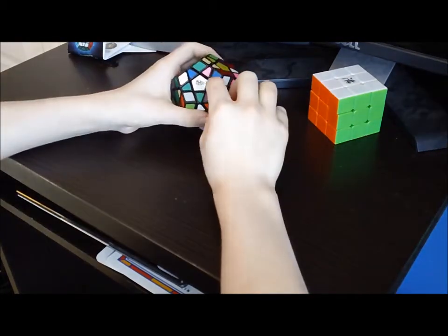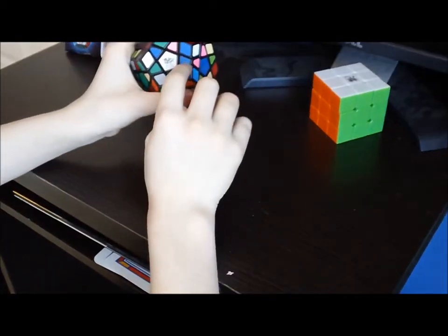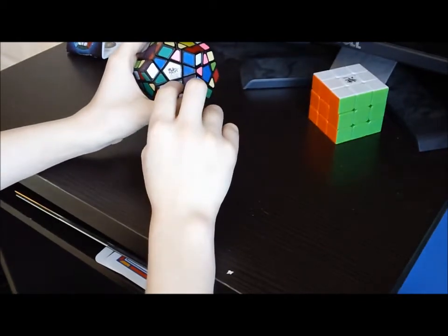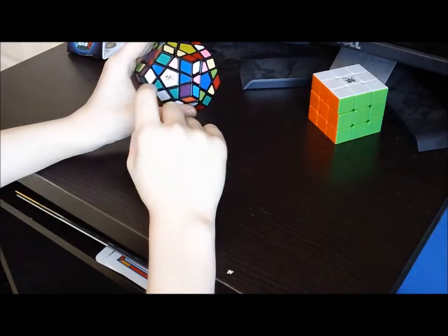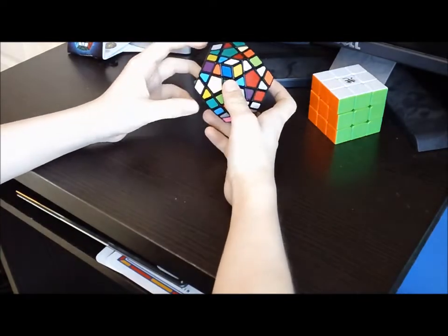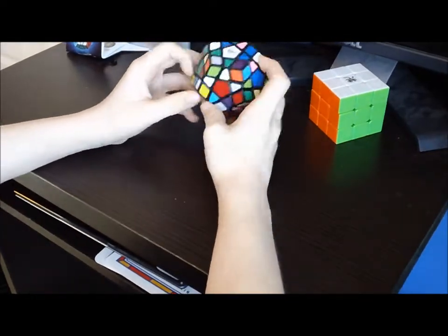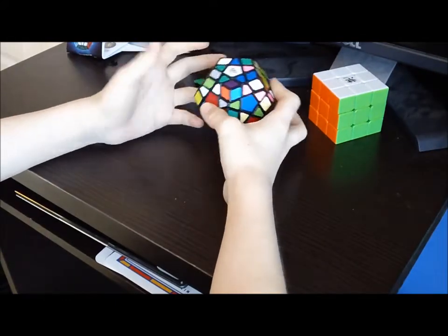The edges are these little triangle pieces. And the corners are these little diamond, almost kind of pieces. Now, then these are centers, of course. And I think that's about it for notation about what is each piece.